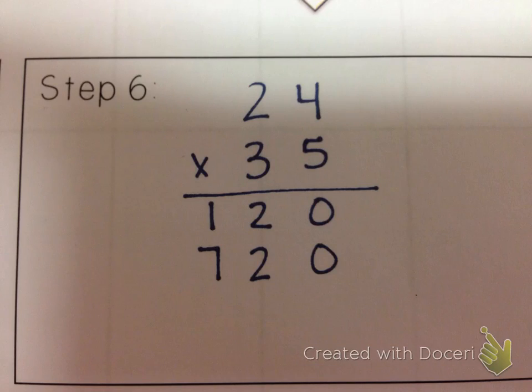And then the last step is to add those two numbers together. So we're going to add zero plus zero, two plus two, and one plus seven. So the answer, twenty-four times thirty-five equals eight hundred and forty.